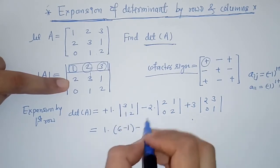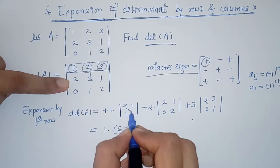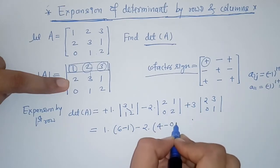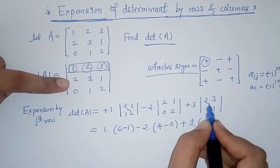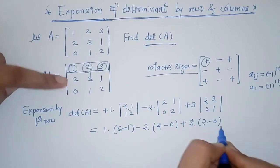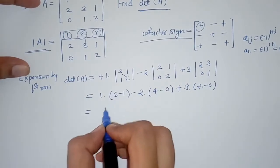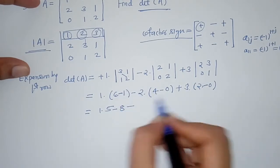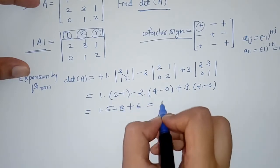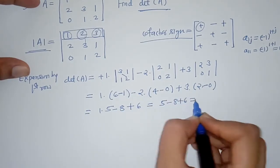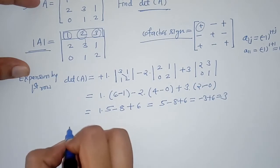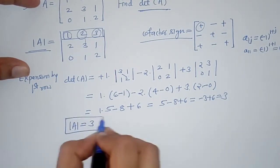Now we solve the 2×2 determinants. For the first minor: 3×2 − 1×1 = 5. For the second: 2×2 − 0 = 4. For the third: 2×1 − 3×0 = 2. Simplifying: 1×5 − 2×4 + 3×2 = 5 − 8 + 6 = 3. So the value of the determinant by expansion by the first row is 3.